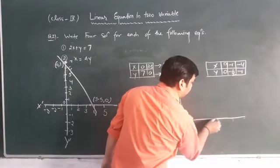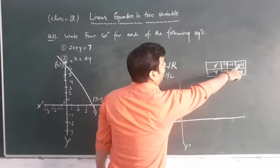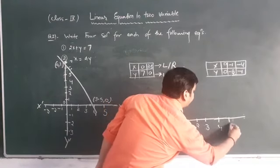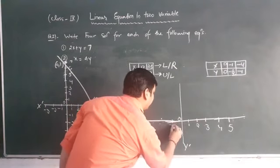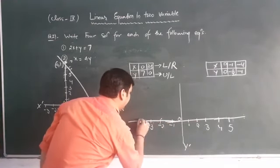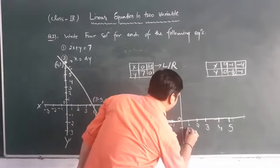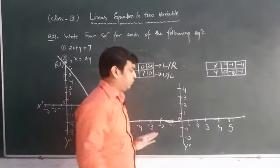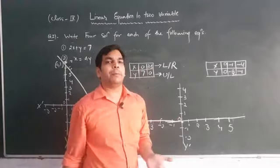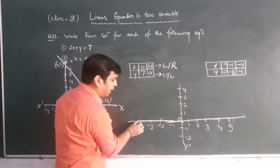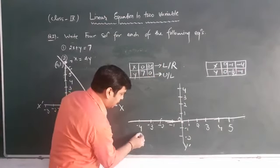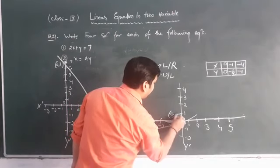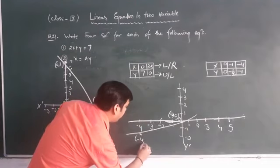In the same way, we will plot this graph for this equation. Values are 0,0 and minus 4 comma minus 1. Mark 1, 2, 3, 4, 5 on positive axis. Here minus 1, minus 2, minus 3, minus 4. Here minus 1, minus 2. And 1, 2, 3, 4. First coordinate is 0 comma 0 - that is at our origin point, which we already know. Second is minus 4 comma minus 1. Minus 4 is on left side here, and minus 1 is on lower side. So minus 4 comma minus 1 will be represented here. Now we can draw a line going through these two points. We will write here the two points given: minus 4 comma minus 1.